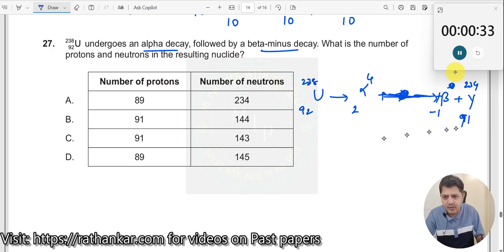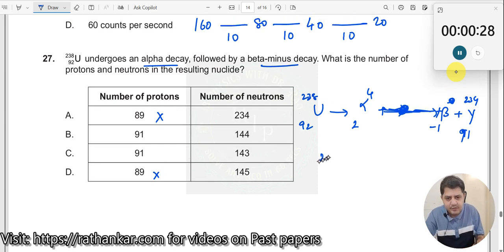So therefore these two are incorrect. Now if you only look at these two, 234 minus 91. When I do this, 4 minus 1 is 3, 13 minus 9 is 4, 143. 143 should be your neutron number. So this should be your right answer. C should be your right answer.